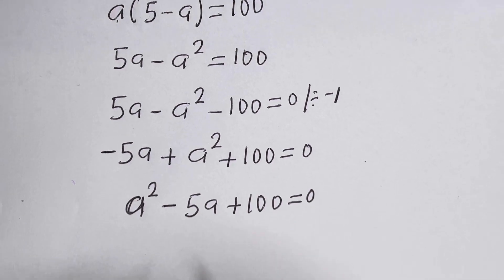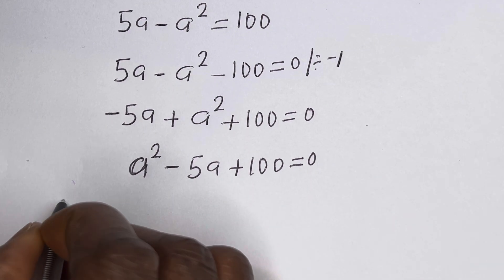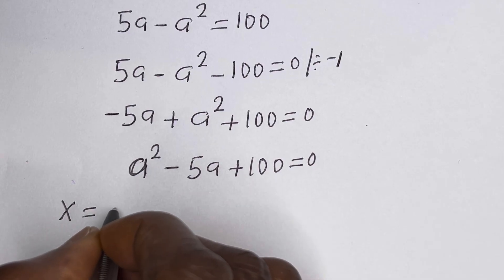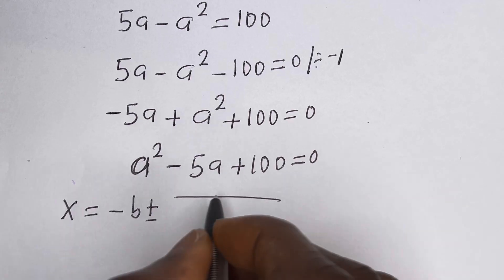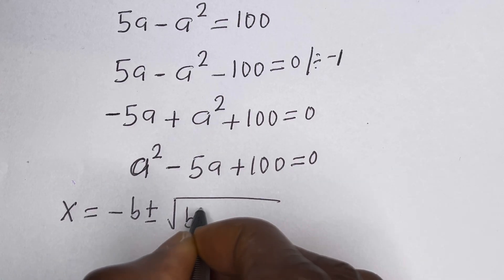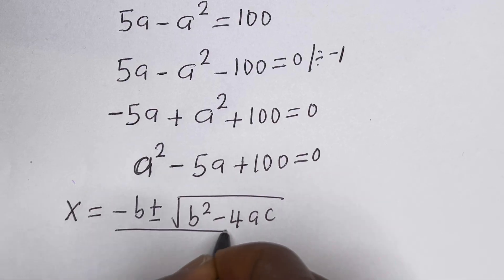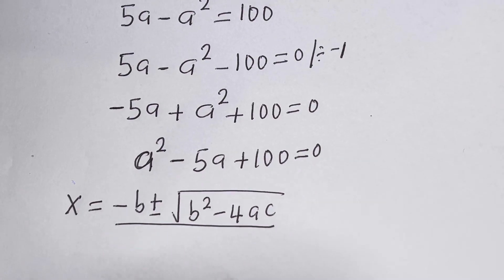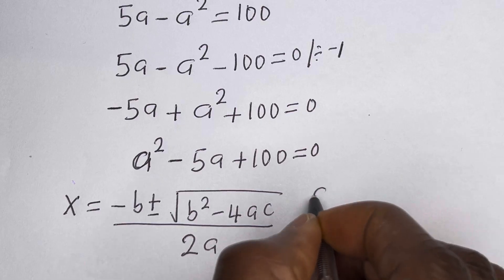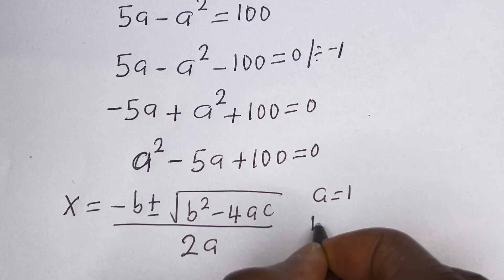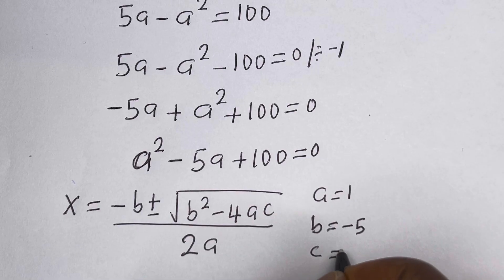This is a quadratic equation which can be solved using the quadratic general formula. From the quadratic formula, x equals minus B plus or minus square root of B squared minus 4AC, over 2A. From this equation, A is equal to 1, B is equal to minus 5, C is equal to 100.